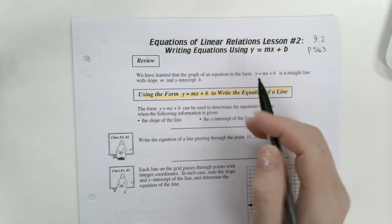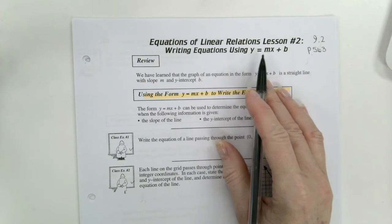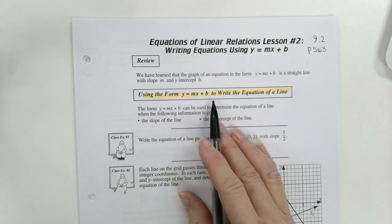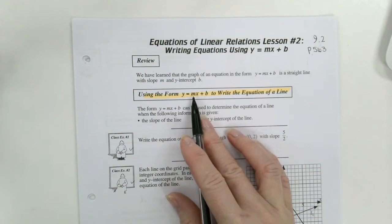Welcome Math 10. Here we go. This is 9.2. This is writing equations using y equals mx plus b that we have worked with before, where b is the y-intercept and m is the slope of the line.